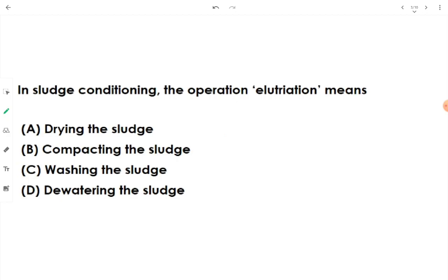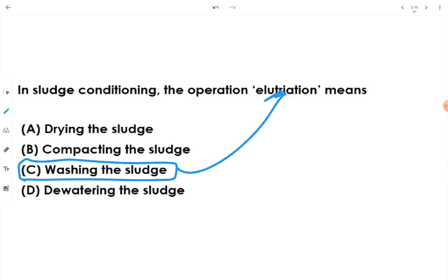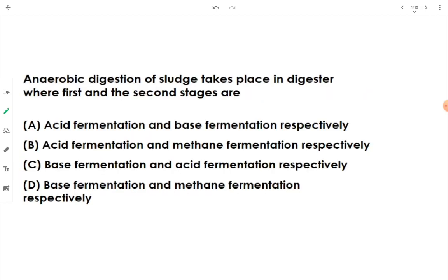In sludge conditioning, elutriation means washing the sludge. We wash the sludge in order to get rid of specific particles. A jet or stream of gas or liquid is aimed at the sludge, and it is washed to separate a specific size of particle. So elutriation means washing the sludge.